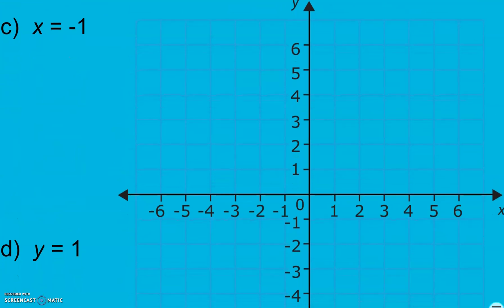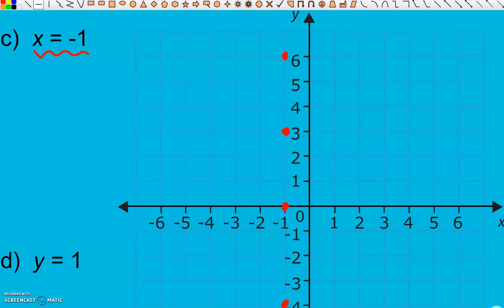Give C a try. X equals negative 1. Well my intercept here is at negative 1 and we want every point that makes that true. So at negative 1, 3, at negative 1, negative 4, at negative 1, 6. All of those have an x value of negative 1. All of these are true.